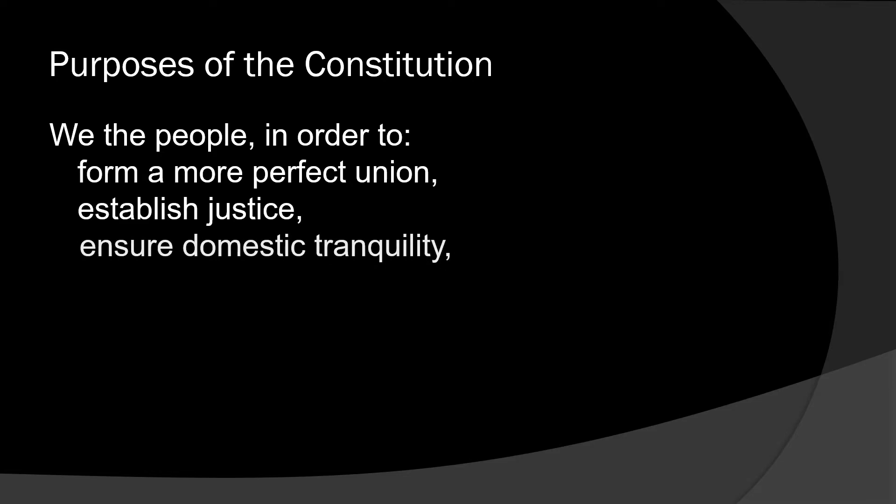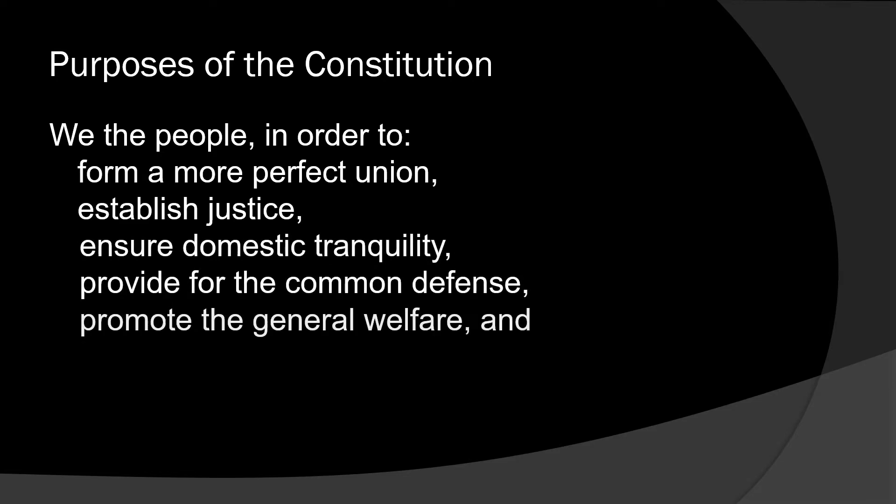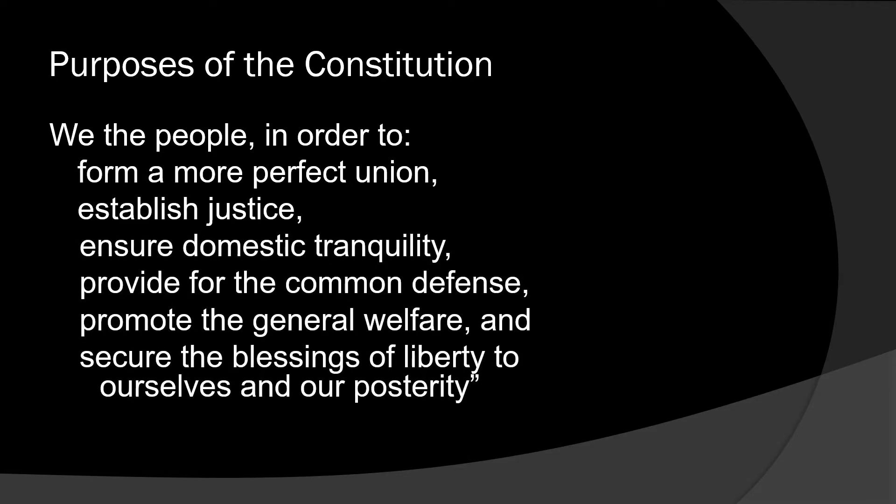The preamble of the Constitution establishes its overarching purpose. Many of us had to memorize it — some using the Schoolhouse Rock song on Saturday mornings. It reads: 'We the people, in order to form a more perfect union, establish justice, ensure domestic tranquility, provide for the common defense, promote the general welfare, and secure the blessings of liberty to ourselves and our posterity, do ordain and establish this Constitution of the United States of America.'